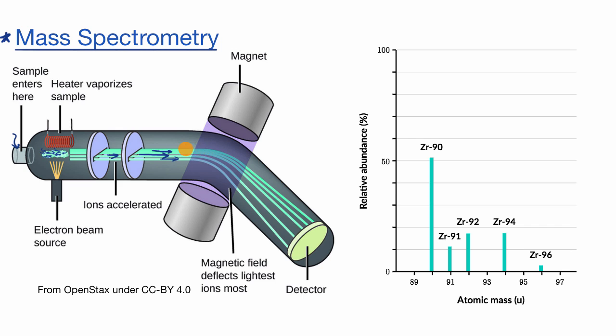And so what you see here are the different isotopes being deflected different amounts as they go through the magnetic field. And then you have the detector, and at different points of the detector, you will detect each of these isotopes. And the more ions that hit a certain part of the detector, that means that you have more of that type of isotope in nature.